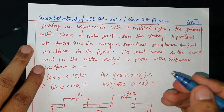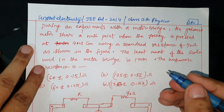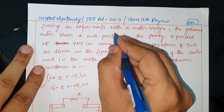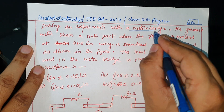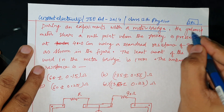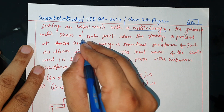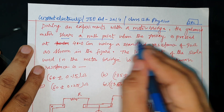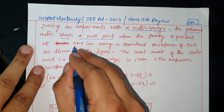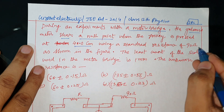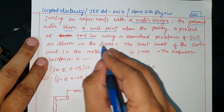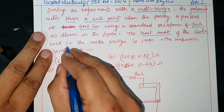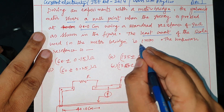Hello dear students, welcome back to my channel Physics SPC. This is last week's question. During an experiment with a meter bridge, the galvanometer shows null point when the jockey is pressed at 40.0 cm using the standard resistance of 90 ohm as shown in the figure. The least count of the scale used in the meter bridge is 1 mm.